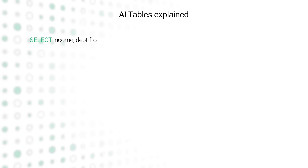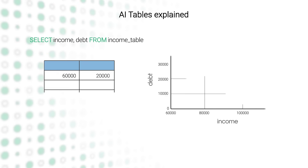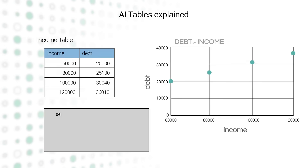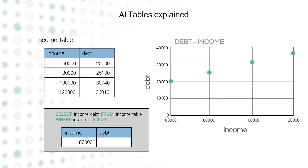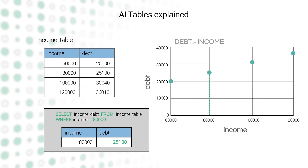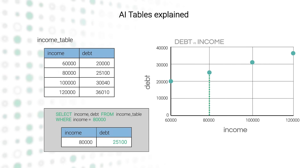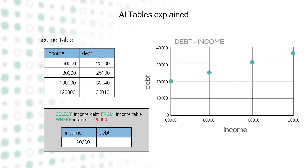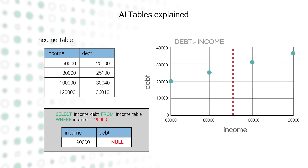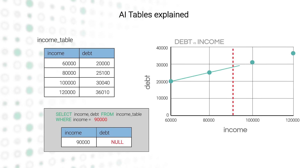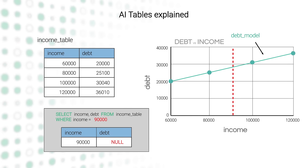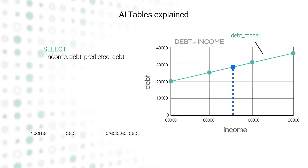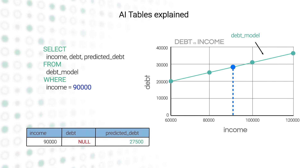Take a very simple table with debt and income. If you query this table for someone with an income of $80,000, it will return a debt level of $25,100. But what if you queried an income level that wasn't present on the table, like $90,000? You receive no answer. But what if you had a model trained on this exact data in the database? Now you would receive a predicted result of $27,500.